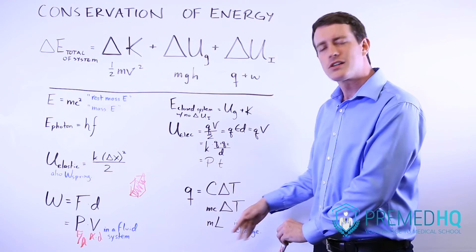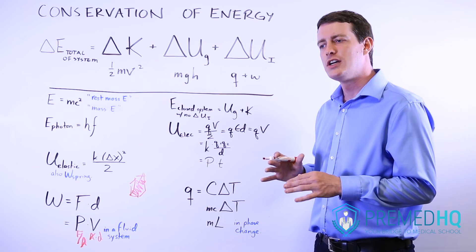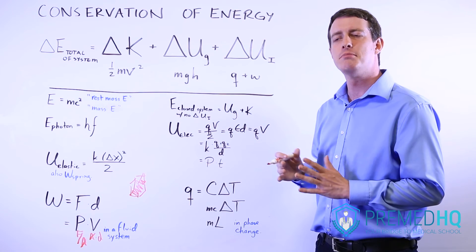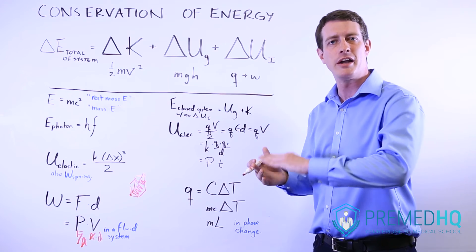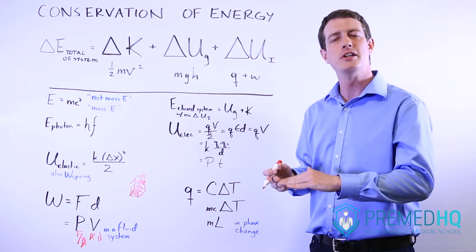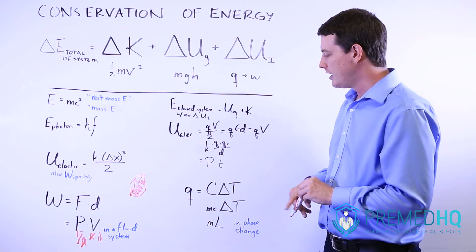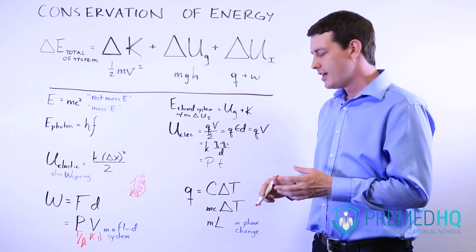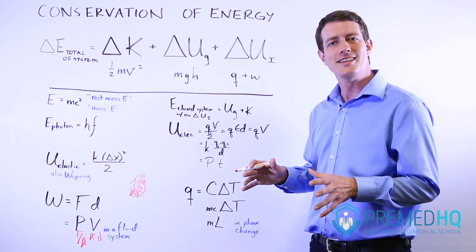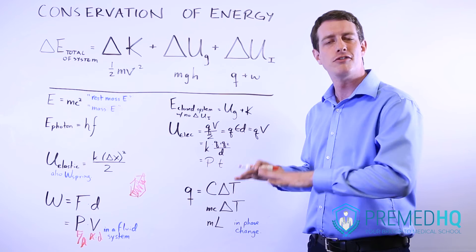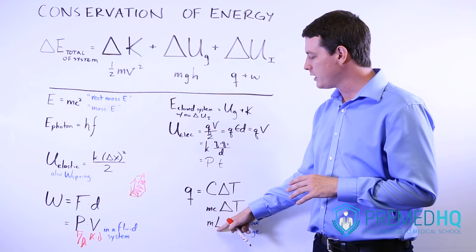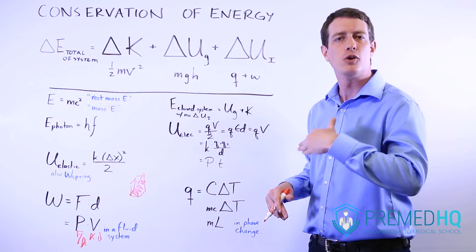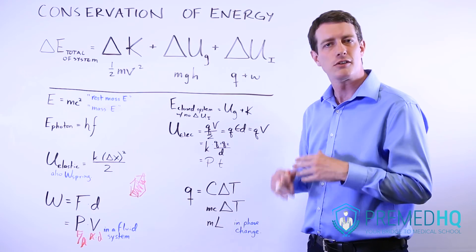If something is undergoing a phase change — remember that in a phase change the heat isn't increasing the temperature but instead breaking bonds, allowing a solid to turn into a liquid or a liquid to turn into a gas — then you use the formula Q = mL, where m is mass and L is the latent heat. The latent heat is something that has to be overcome in order for that phase change to happen. So Q = mL is what you use if something is being converted from a solid to a liquid or from a liquid to a gas.